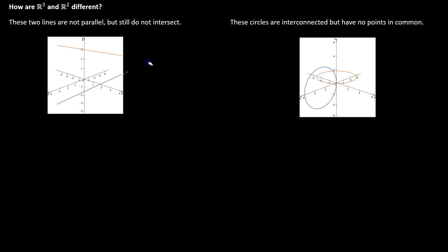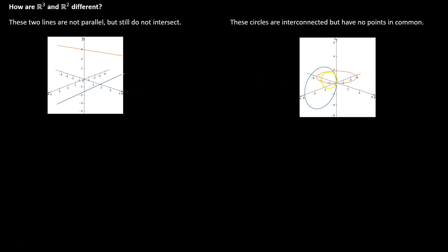On the next picture we have two circles that are interconnected, but they have no points in common. That was never possible in 2D. If you tried to draw two circles where they were interconnected, they'd have to pass through each other. But here the blue circle loops around the red circle and the red circle loops around the blue circle — kind of like chains interlocking — but they're not actually sharing a single point in common.